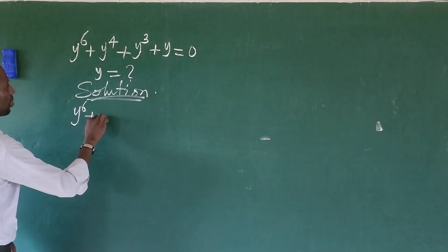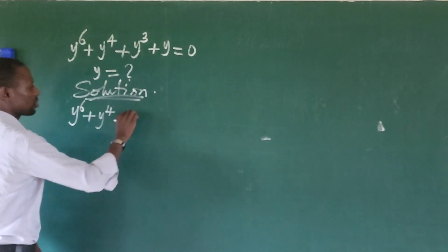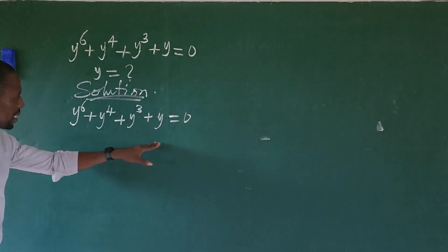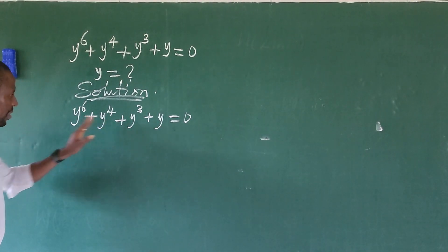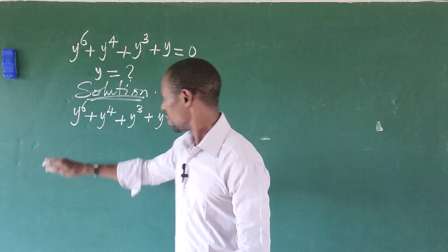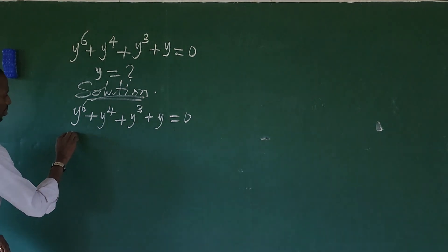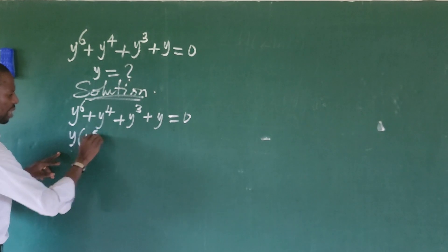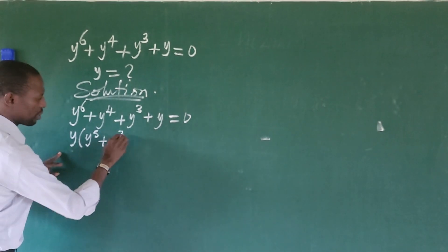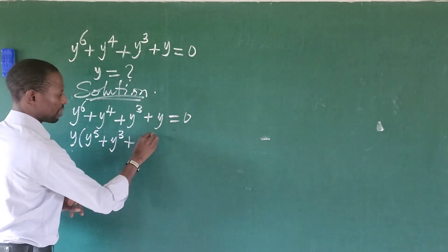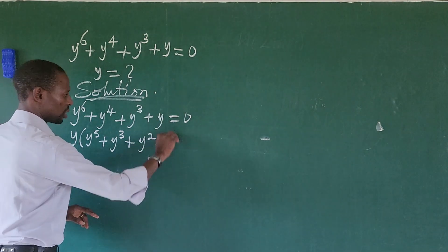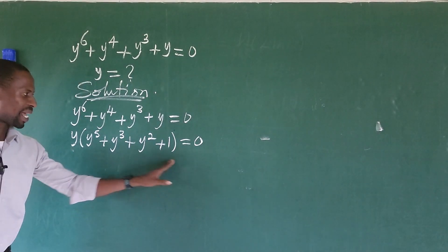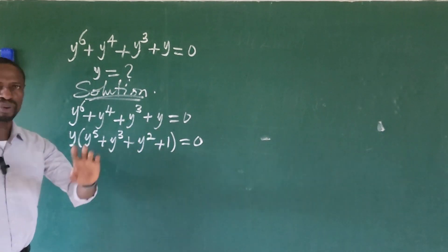We have y to the power of 6 plus y to the power of 4 plus y to the power of 3 plus y equal to 0. If you look at this, you'll discover that y is common to everything here. So we can factor out y from this. So if we factor out y, we're going to have y multiplied by the bracket, and we can apply the zero product rule here.